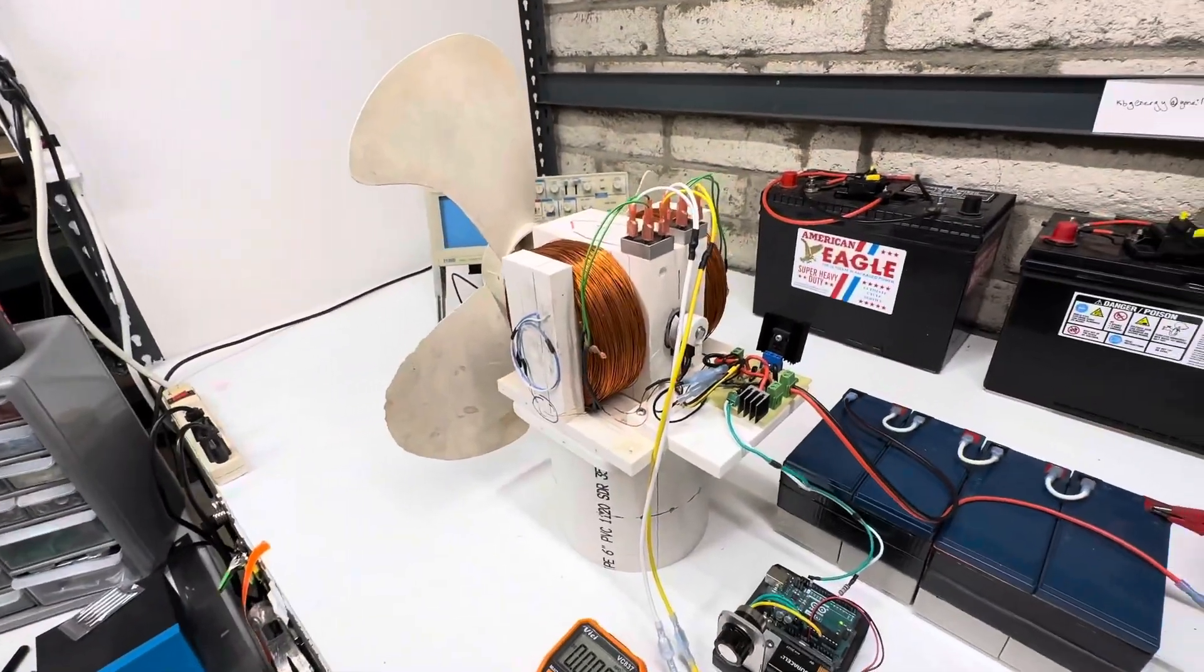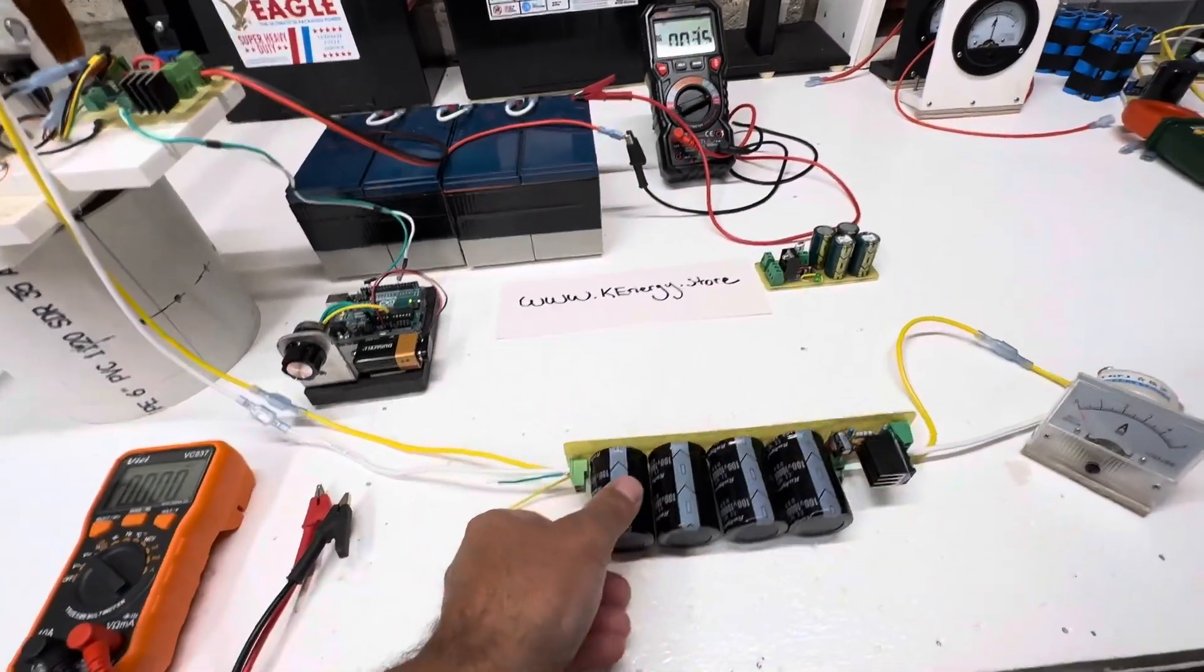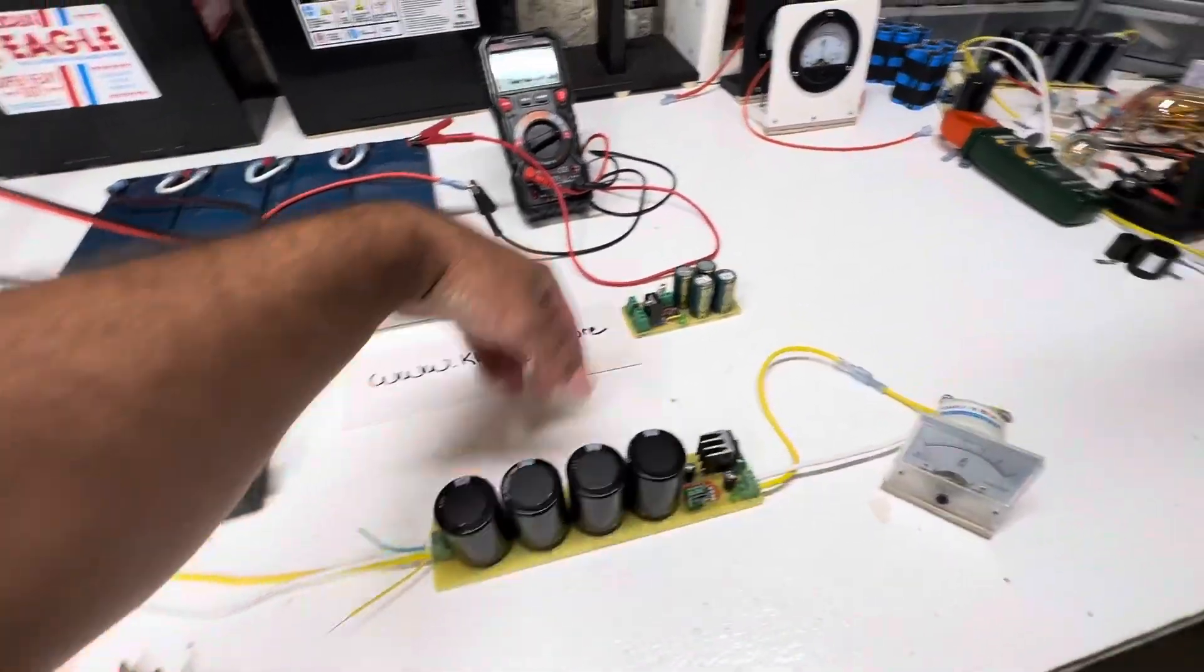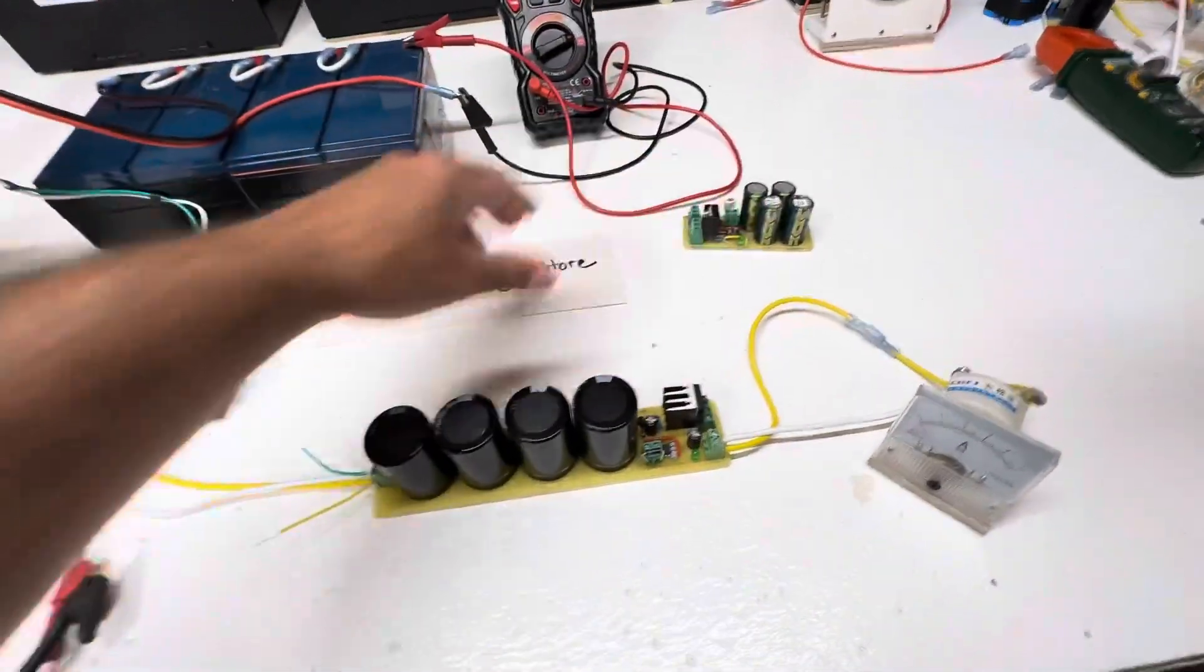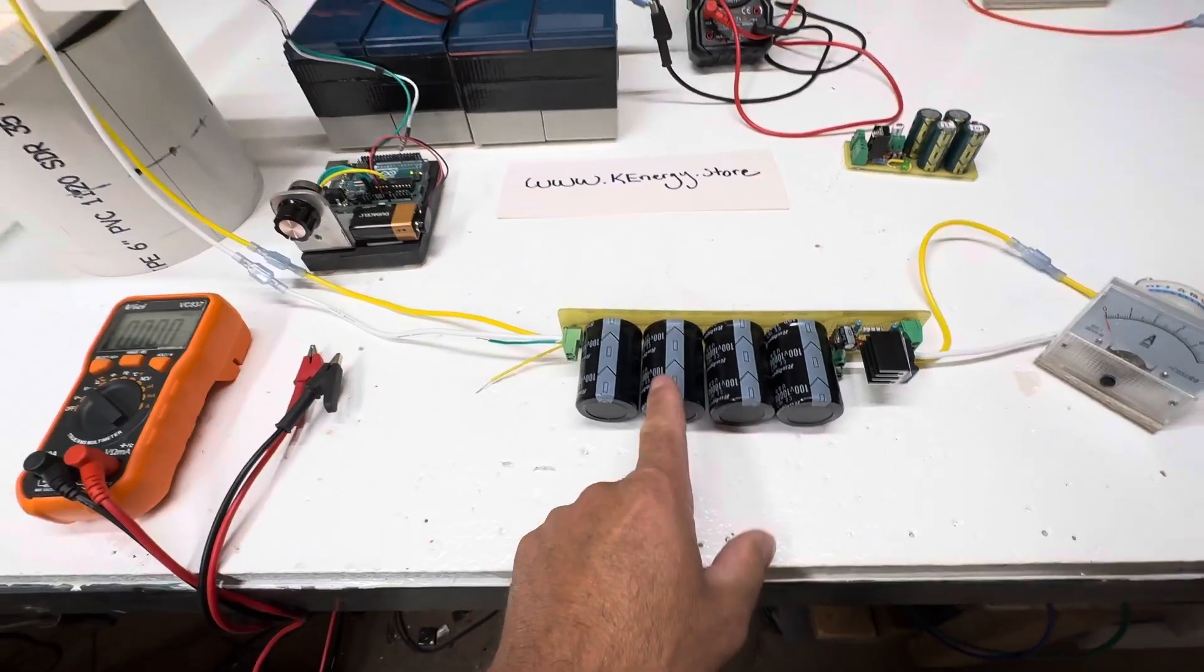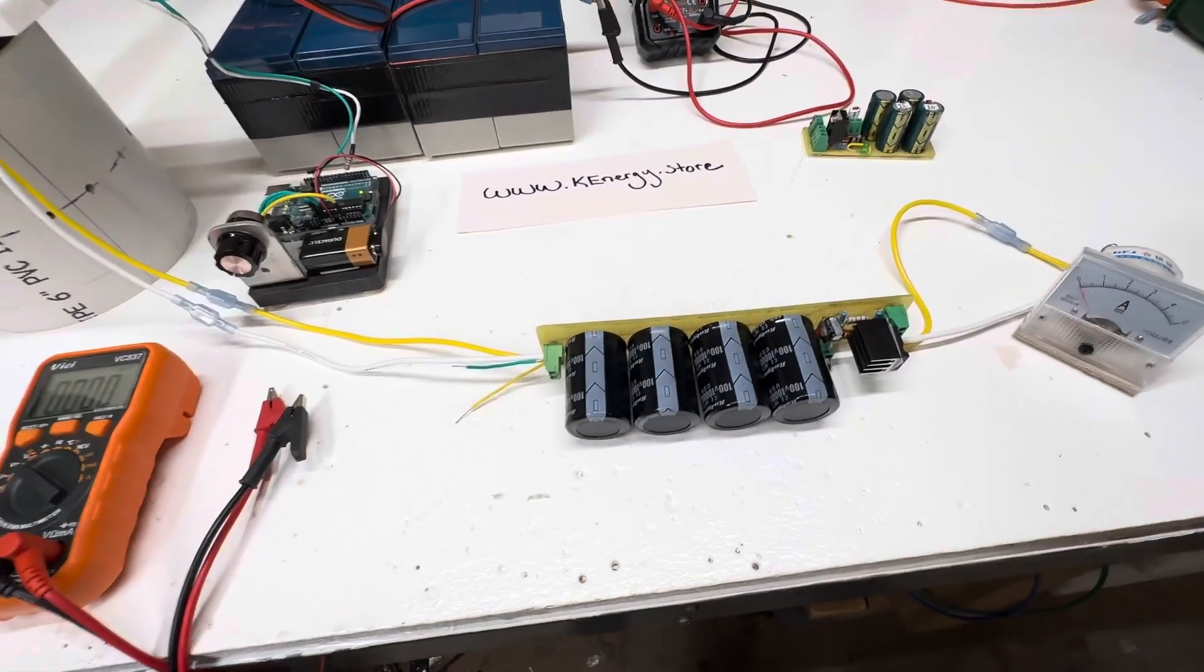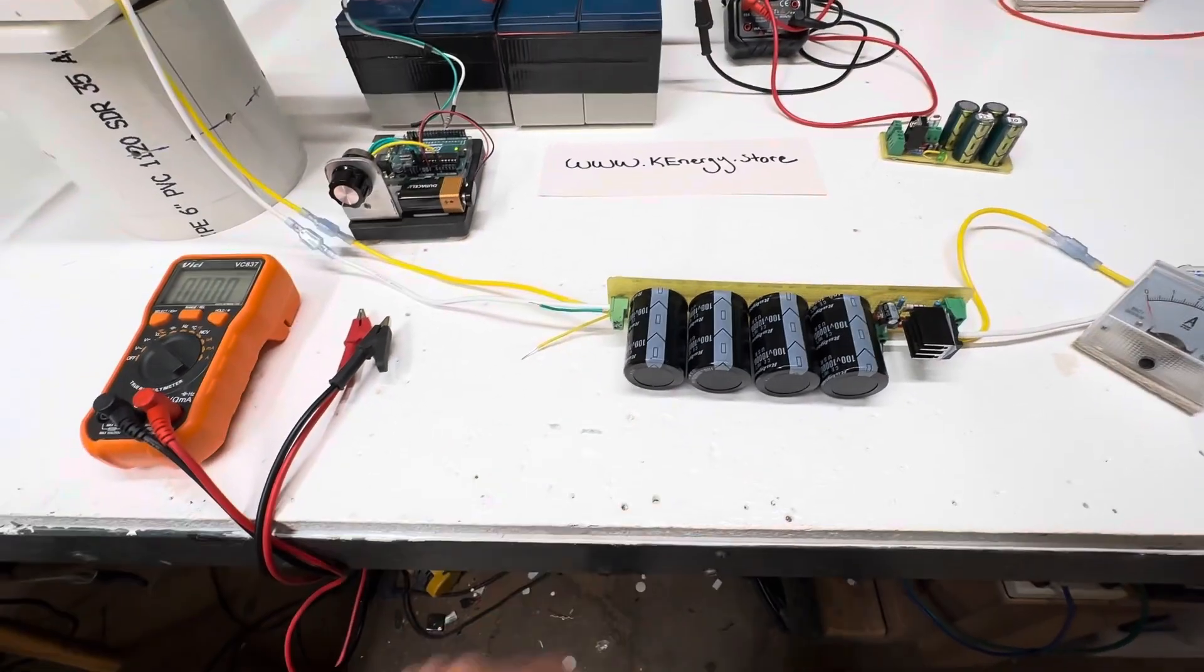this big Bedini-style motor. This cap dump is actually the same microfarad rating as this one, so they're both 10,000. With four, we have 40,000 microfarads at 100 volts. This one can do voltages all the way up to 80 volts.